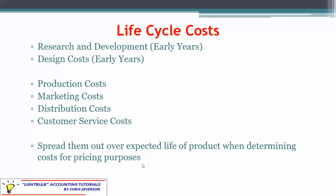Life cycle costs refer to all costs across the product's life. Research and development and design costs occur in the early years, even before a product is released — we can't ignore them; we must price our product to recover these costs. Then throughout the product's life we have production costs, marketing costs, distribution, and customer service. The goal is to spread early life cycle costs out over the expected life of the product so we properly price it to cover all costs.